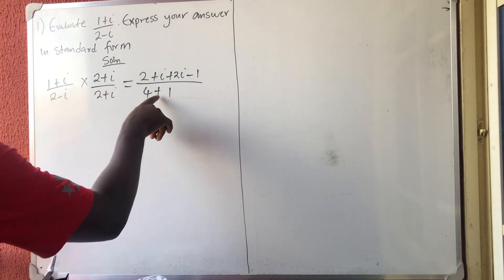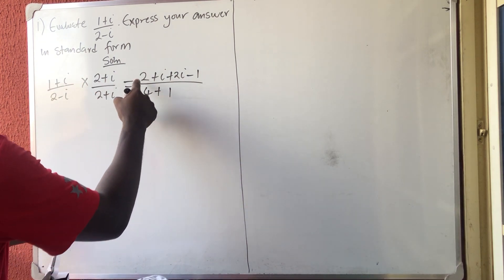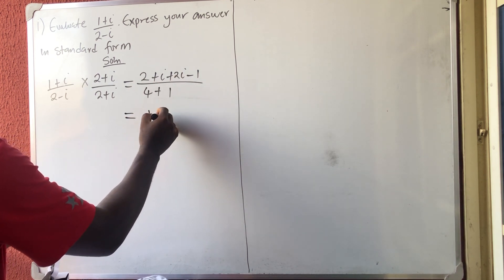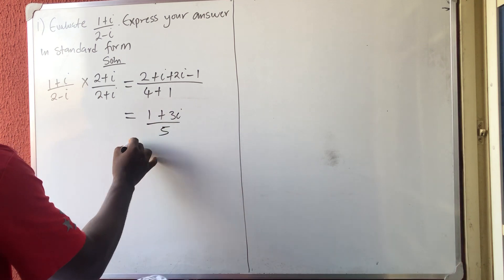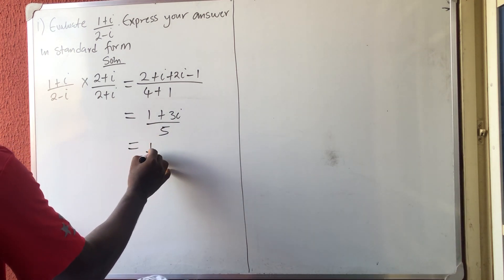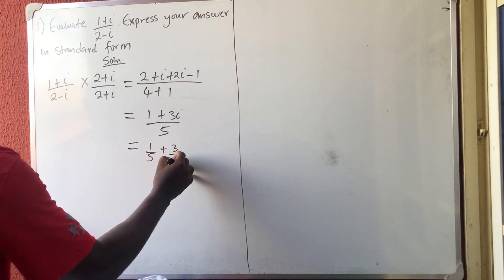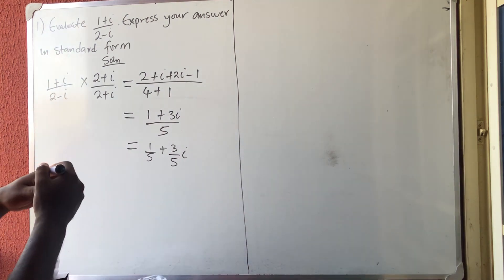1 times 1 is 1, we are using plus always. So my answer here is 1 plus 3i all over 5. So if you separate it, you are going to have 1 over 5 plus 3 over 5 i, as simple as that.